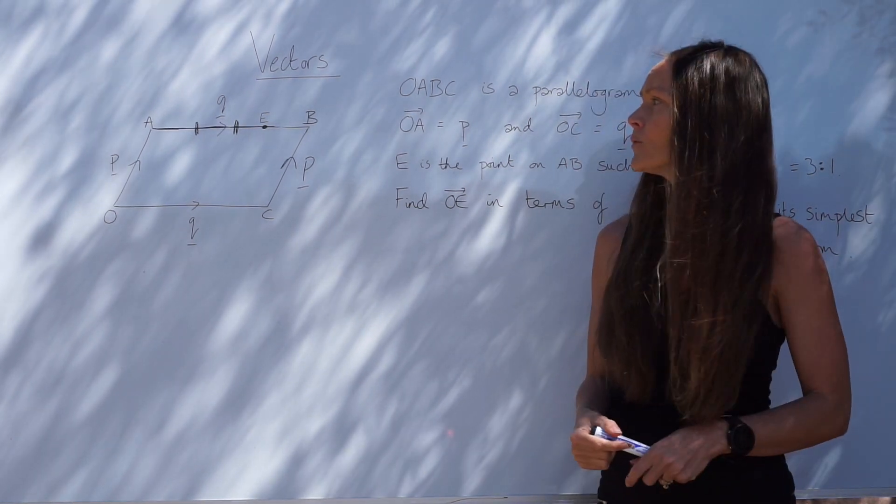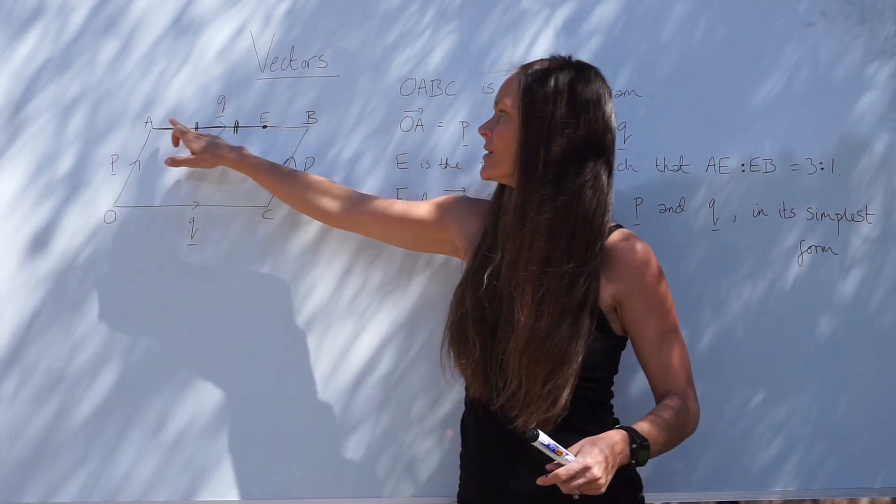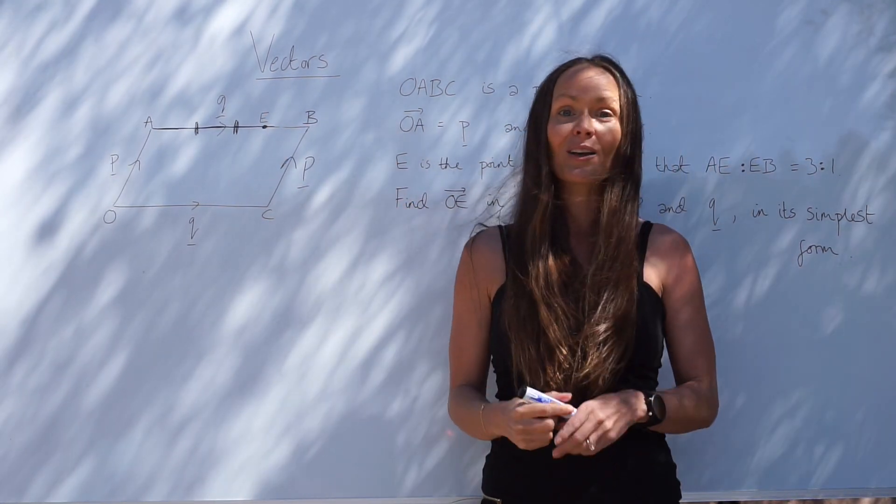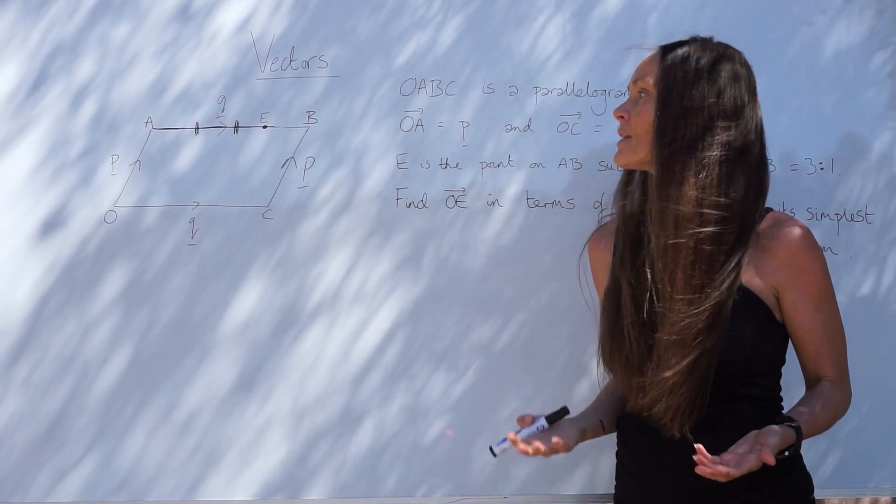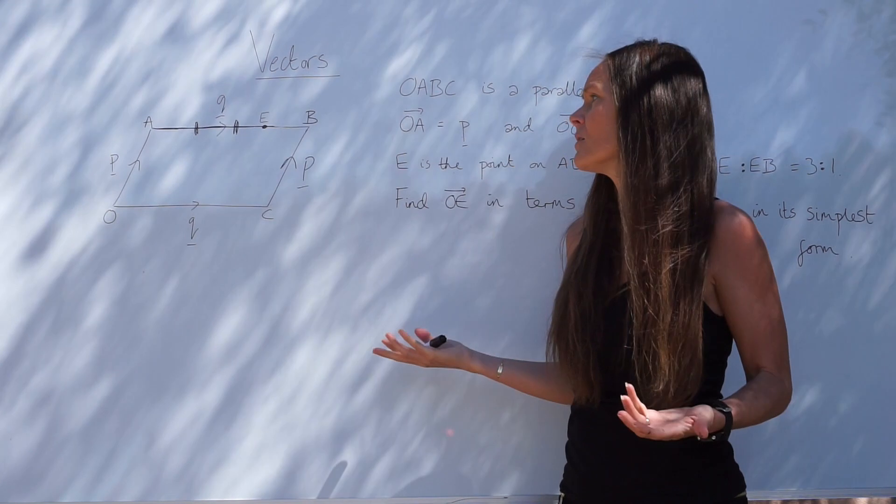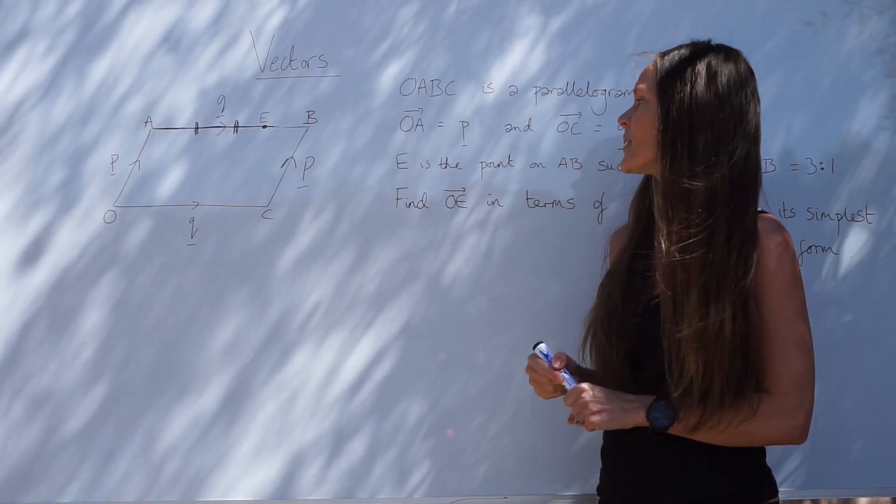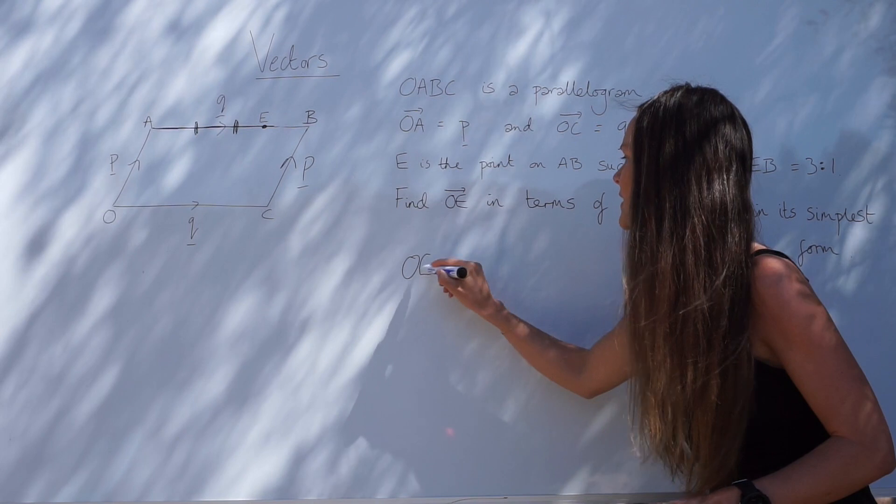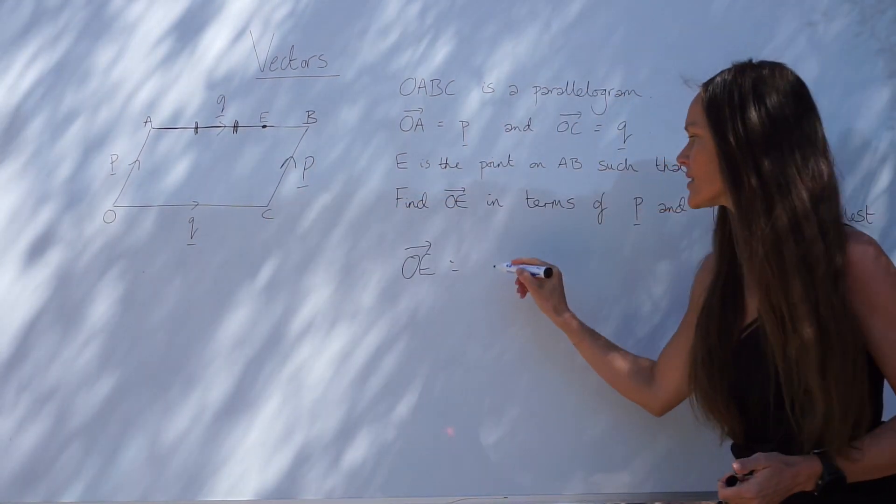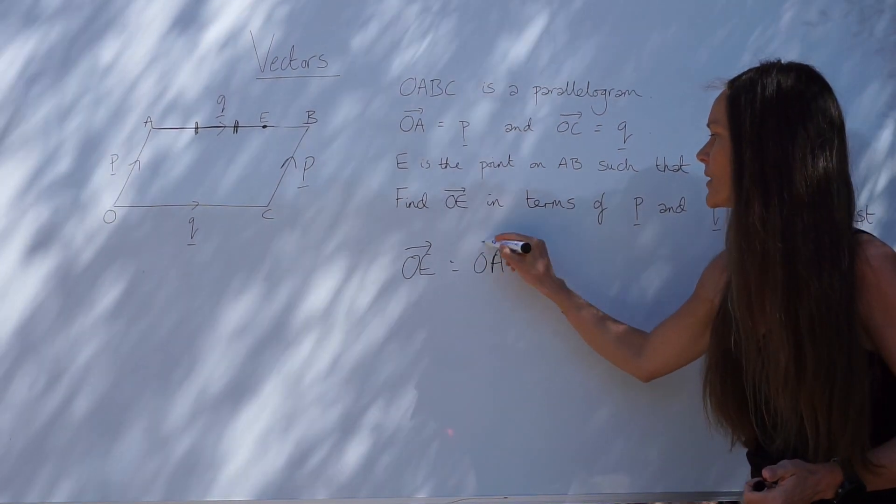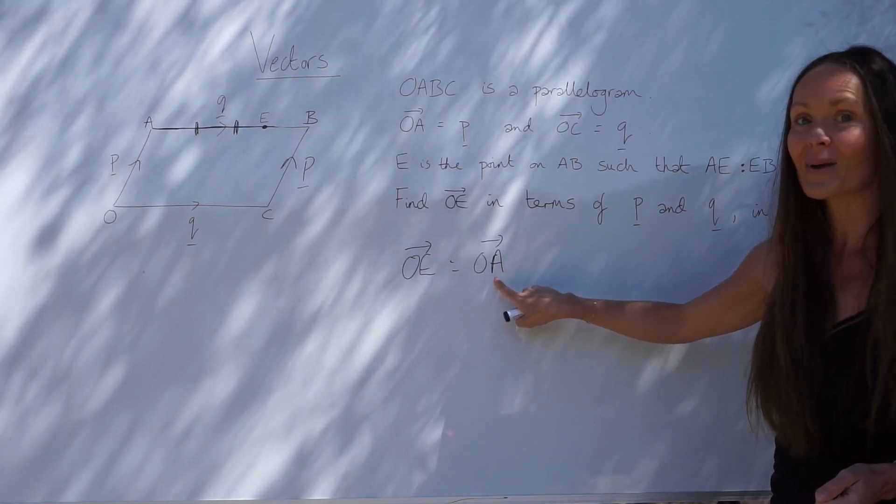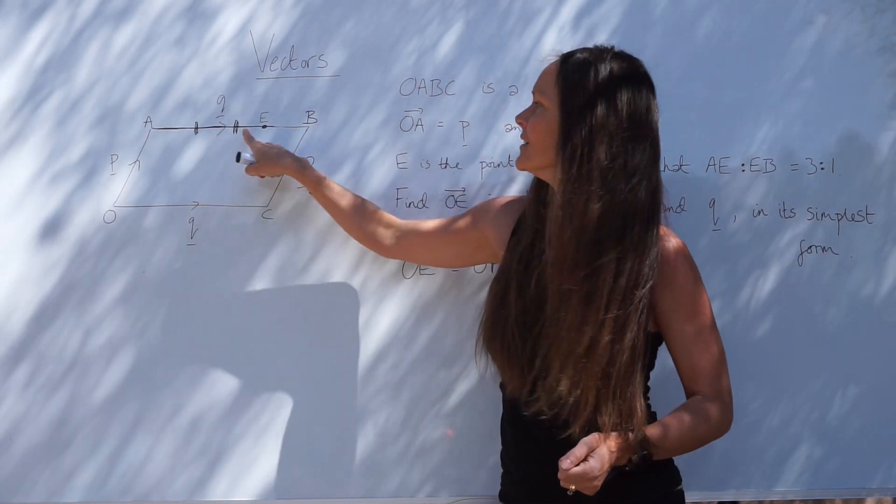And it doesn't matter which way you travel. You can travel this way to get to E, or you can travel this way to get to E. As long as you simplify your answer, you should get the same thing either way. I'm going to travel this way, just because I think it looks a bit shorter and a bit simpler. So to get from O to E, I'm first going to travel along the line OA.